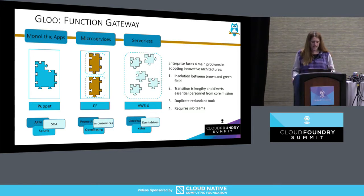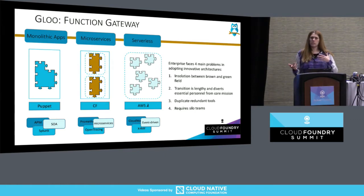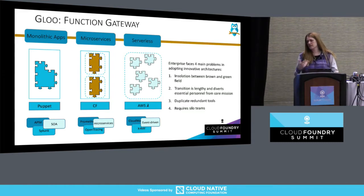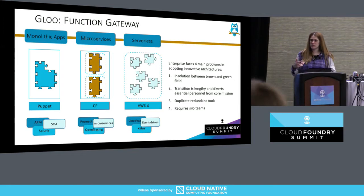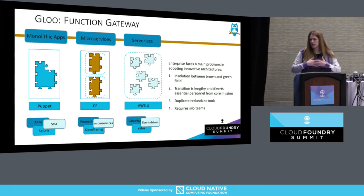Today in the ecosystem there are three groups. First, people doing monolithic — mainly enterprise — managed by something like Puppet, Chef, or Ansible, using their own tools for logging and debugging, running SOA architecture. Then there's microservices — Cloud Foundry, Kubernetes, or others — using open tracing for logging, primitives for metrics, and microservices architecture. And then there's serverless, which most likely happens in the cloud. You use the provider's tools like X-Ray and CloudWatch if you're using Lambda, and the architecture is event-driven. The real question is: how do you migrate between them? How do you debug these things?